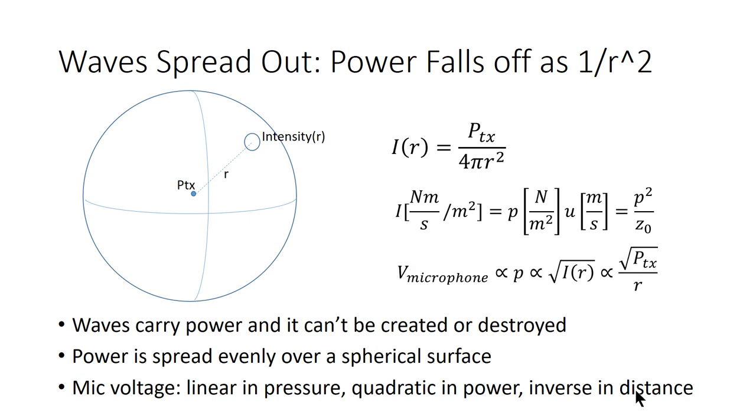So specifically, with that in mind, what we know is that the voltage on the microphone is proportional to the pressure in the water because we're told that by a datasheet. And we know that pressure is proportional to the square root of intensity from our second equation here, I = P² / Z0.